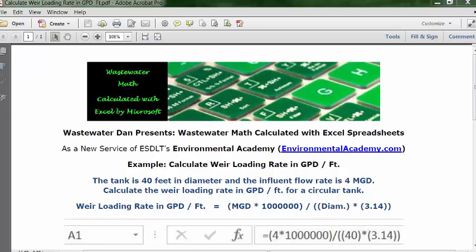Today's problem reads: the tank is 40 feet in diameter and the influent flow rate is 4 MGD. Calculate the weir loading rate in GPD per feet for a circular tank.